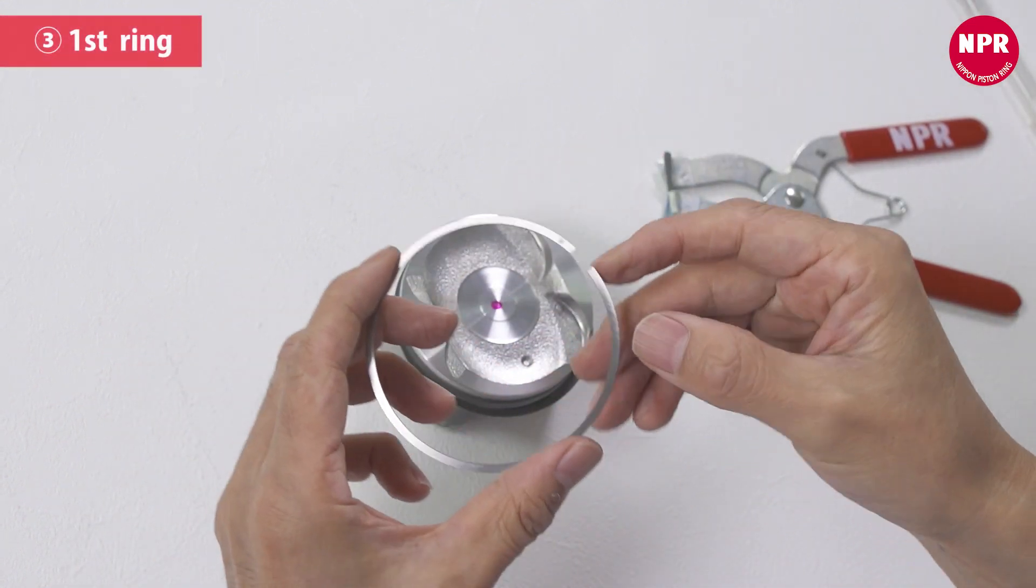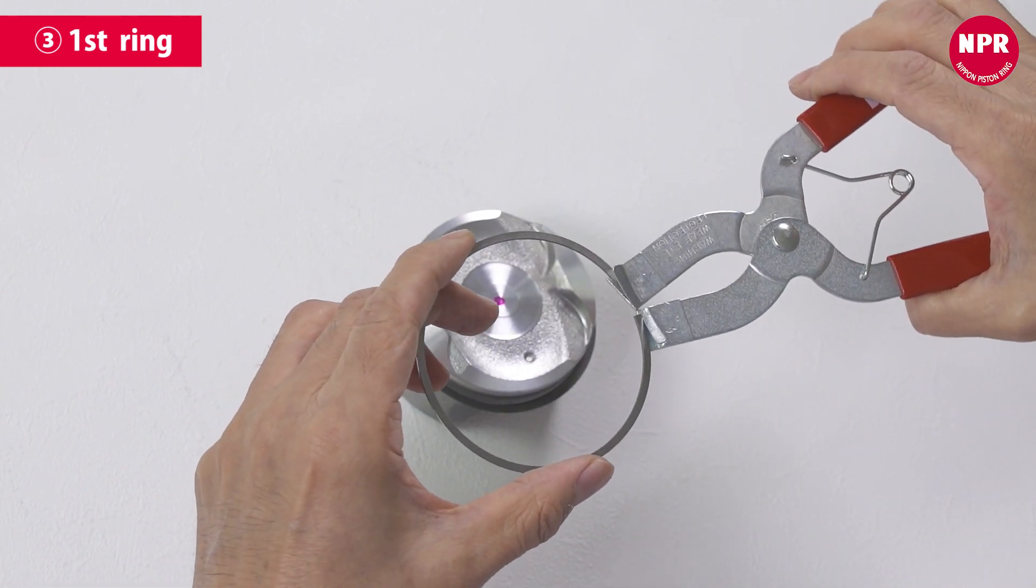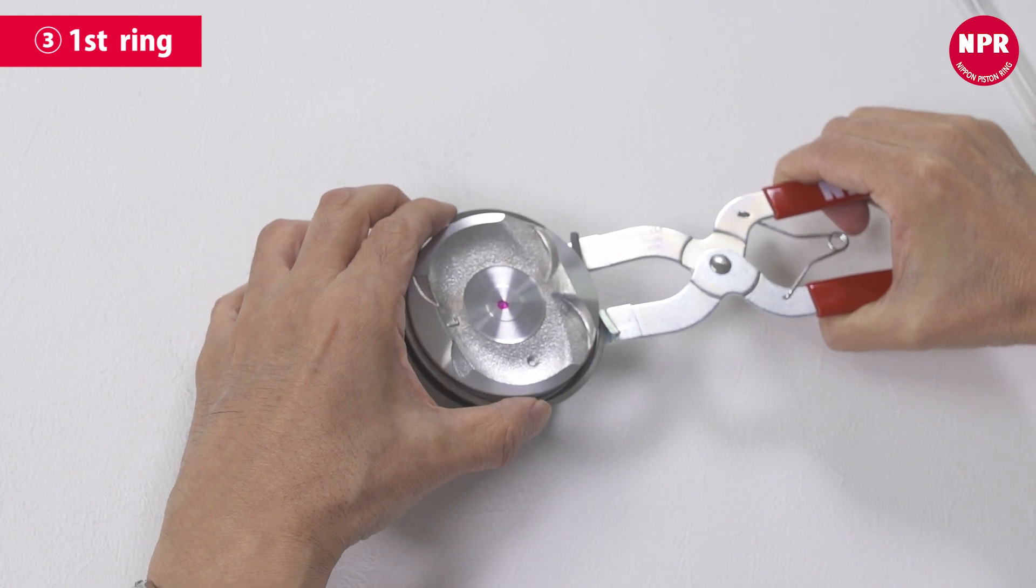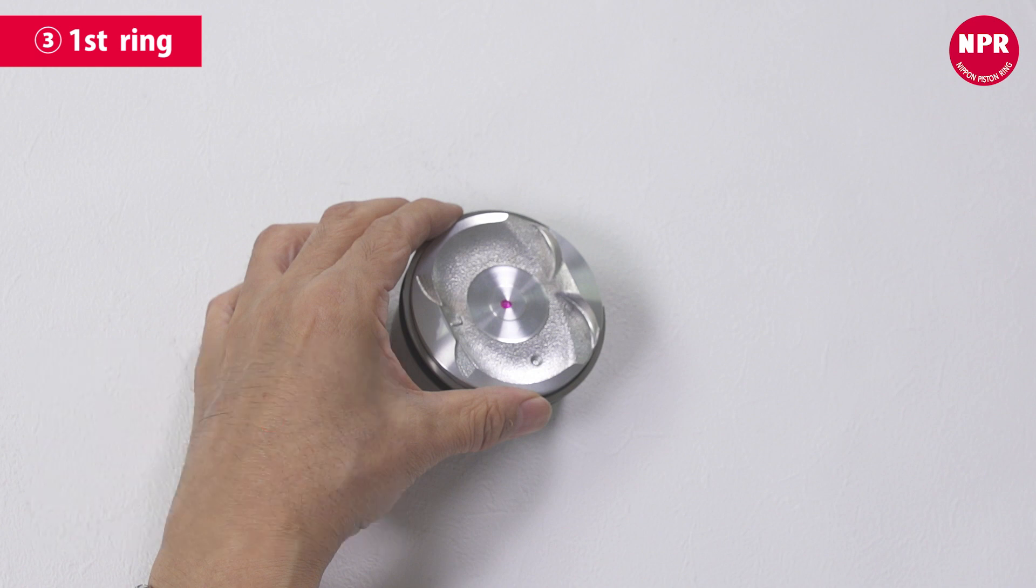Next, attach the first ring. The first ring is attached in the same way as the second ring. As with the second ring, do not open the end gap too much. Always attach the rings with the markings pointed towards the upper side. The top ring installation process is now complete.